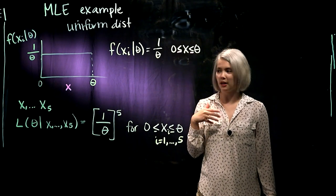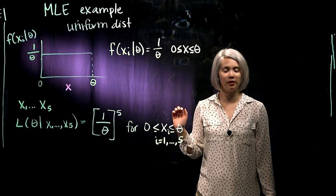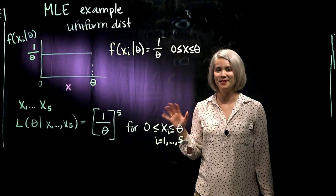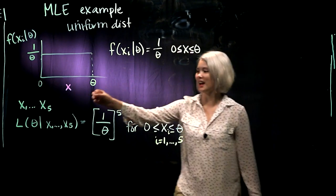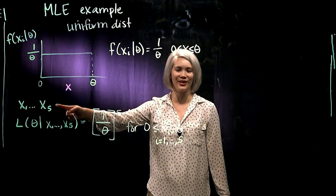All right. So let's imagine we randomly sample five data points. We have a random sample of size 5. We have x1 through x5.